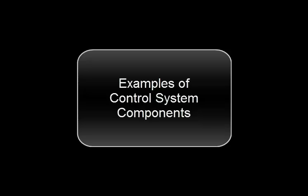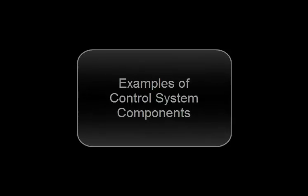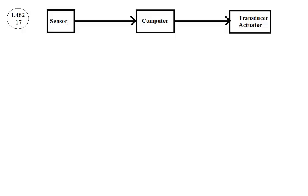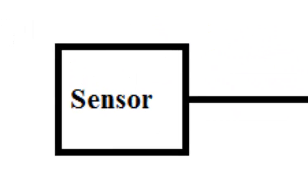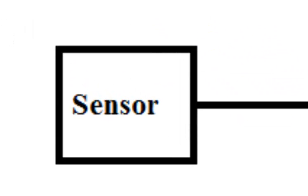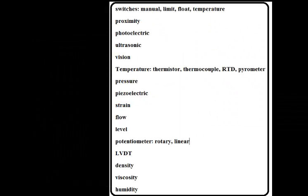Examples of control system components. Sensors include switches: manual, limit, float, and temperature, as well as proximity sensors.